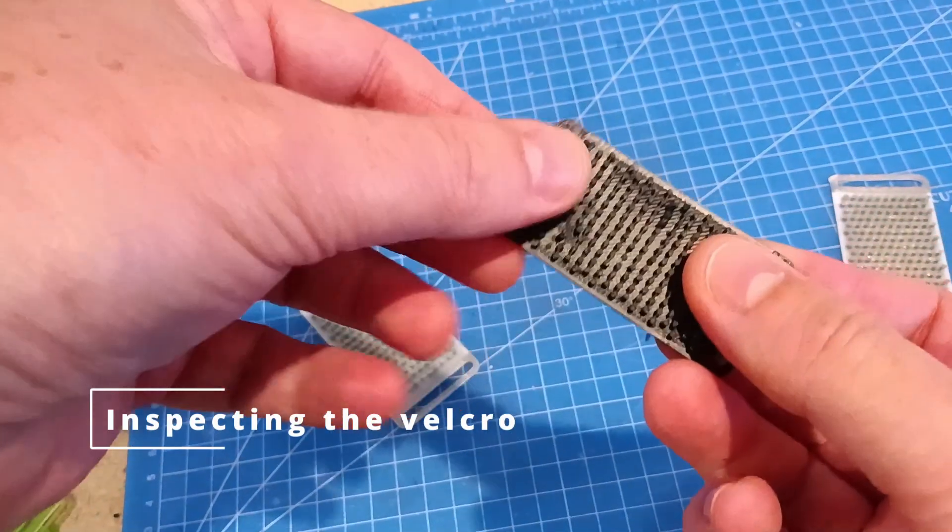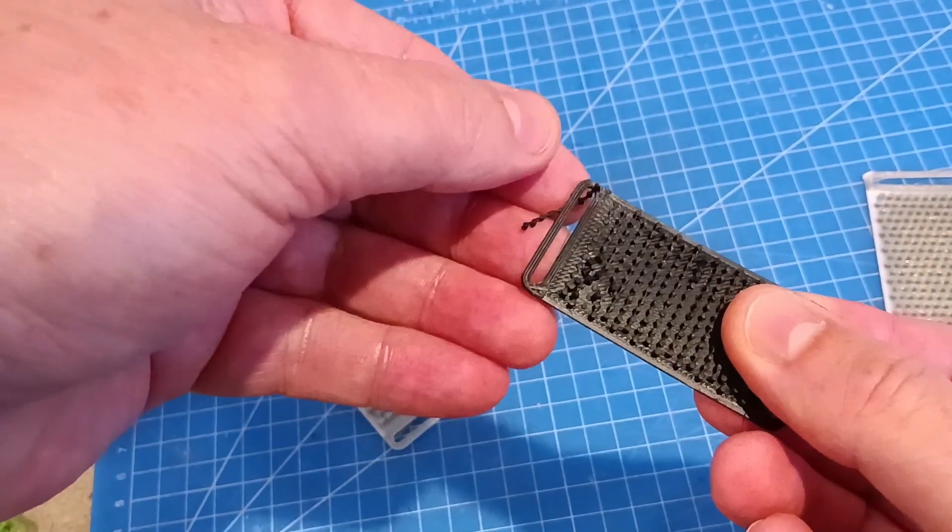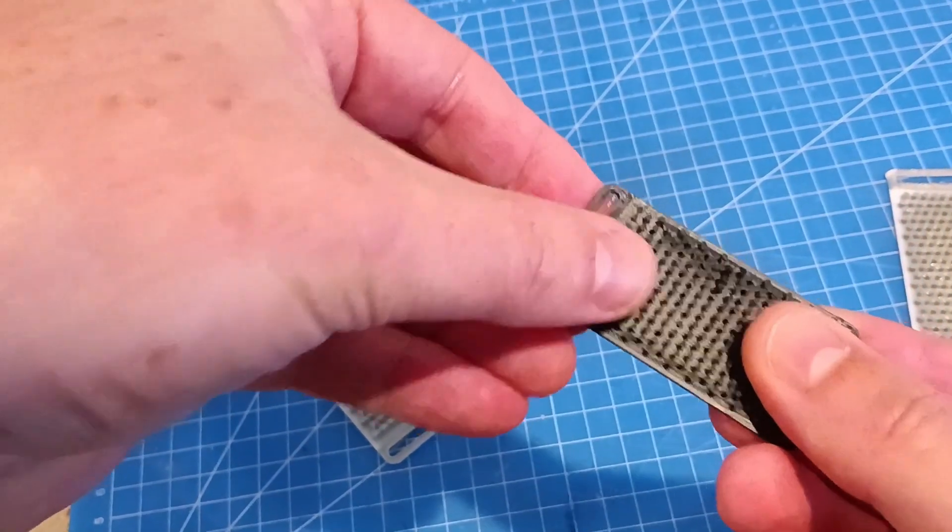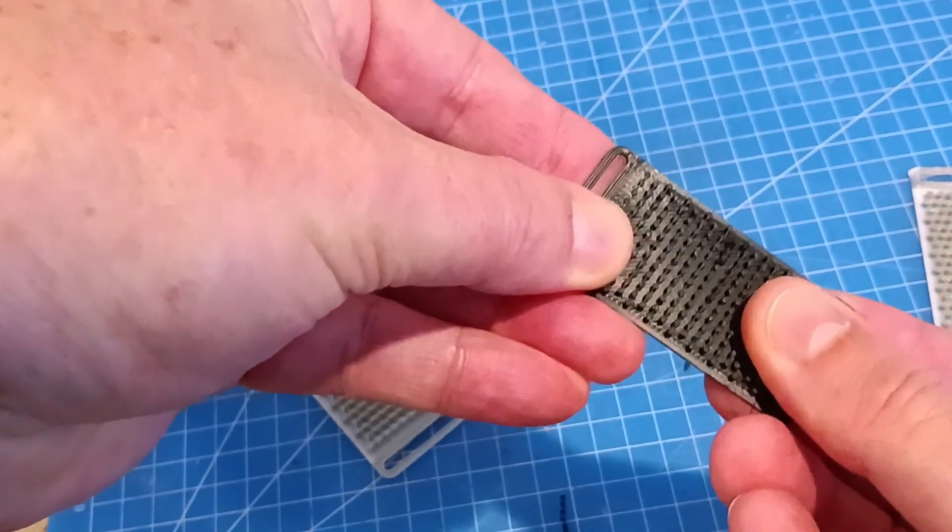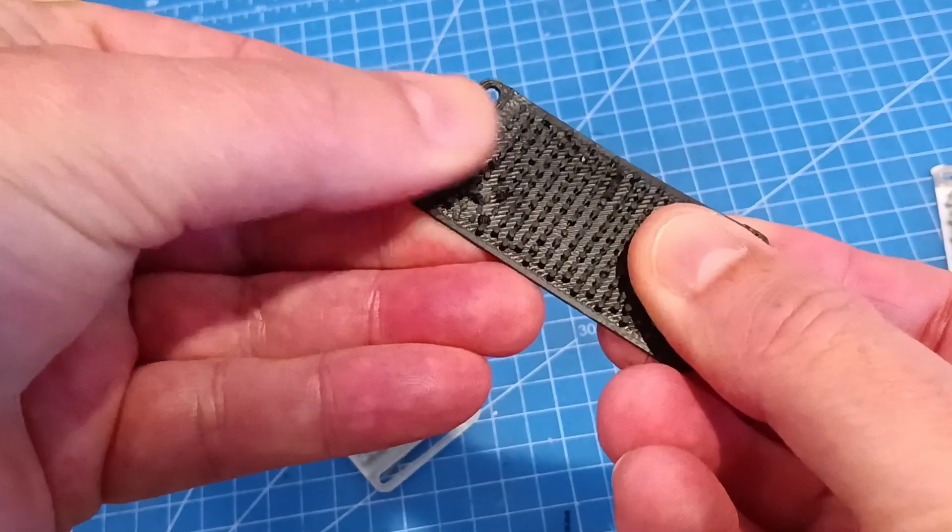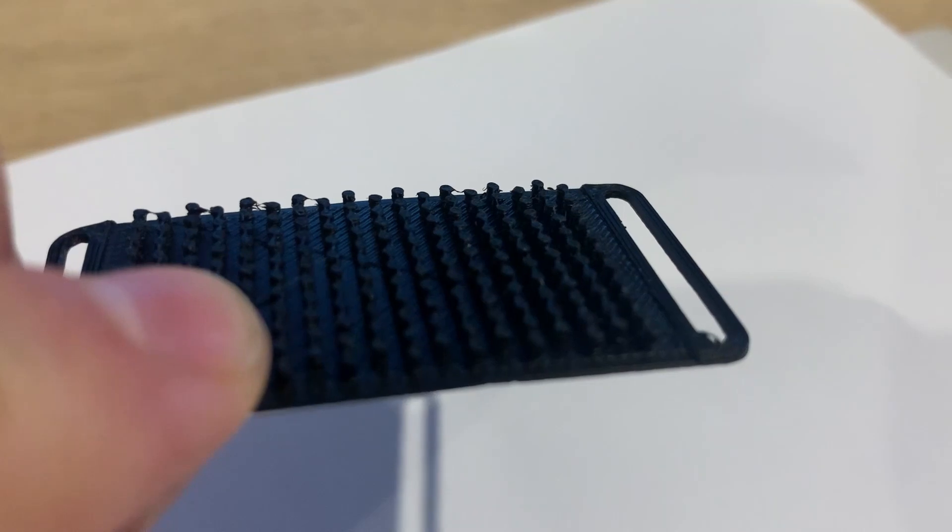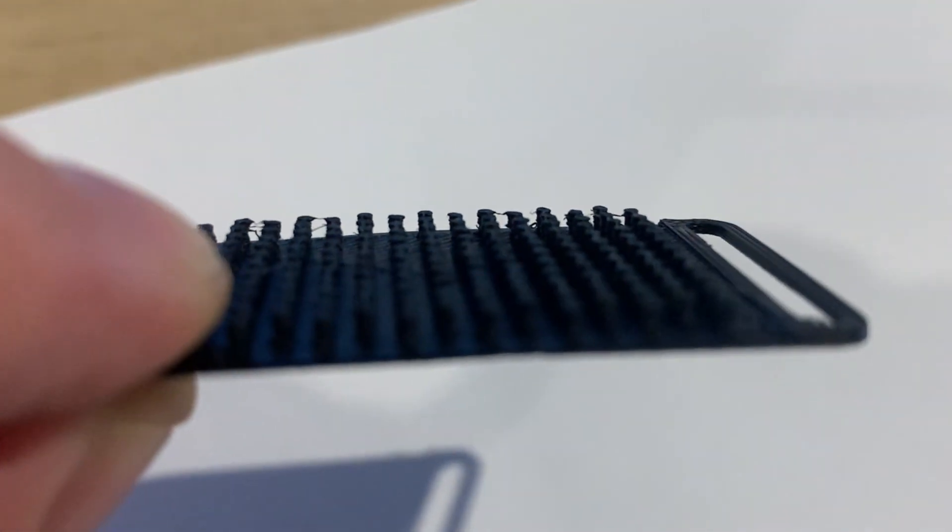I started with a few standard filaments, some green PLA, black ABS. When they first printed I noticed the pins broke off pretty easily, even just putting them together and pulling them apart. I kind of expected it with the small print area for the pins where they attach to the base.